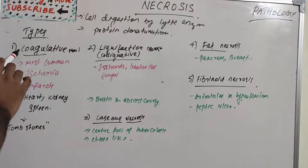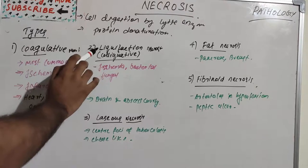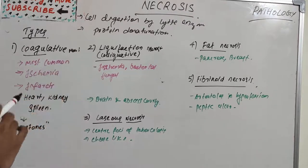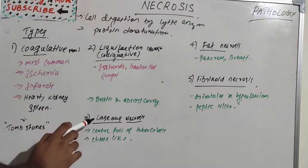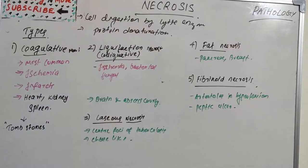There are basically five types of necrosis: the first one is coagulative necrosis, then liquefaction necrosis, caseous necrosis, fat necrosis, and fibrinoid necrosis.